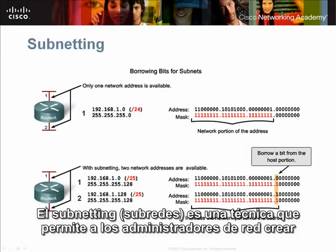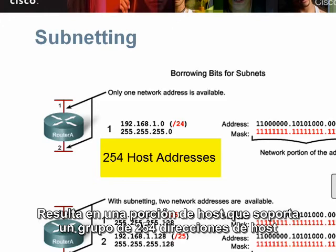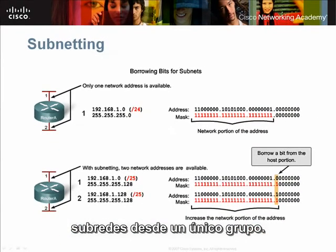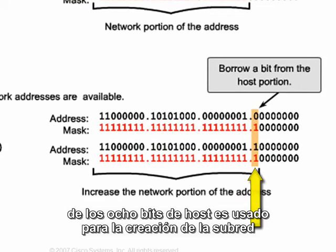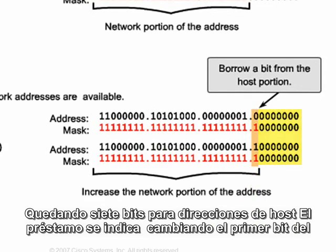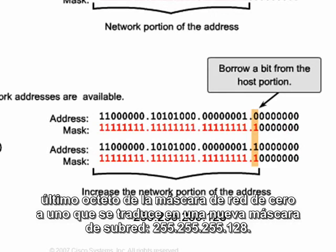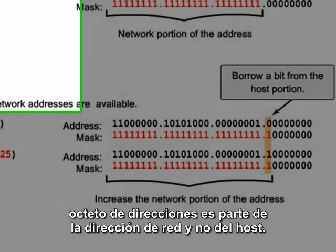Subnetting is a technique that enables network administrators to create multiple networks from a single network address. In this graphic, the 192.168.1.0 network paired with the 255.255.255.0 subnet mask results in a host portion that supports a single group of 254 host addresses. However, you can use bits from the host portion to create multiple subnets — network engineers refer to this as bit borrowing. In this case, the first bit of the original 8-bit host portion is used for subnet creation, leaving 7 bits for host addresses, which changes the subnet mask to 255.255.255.128.